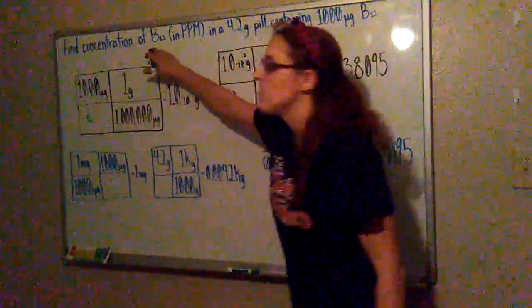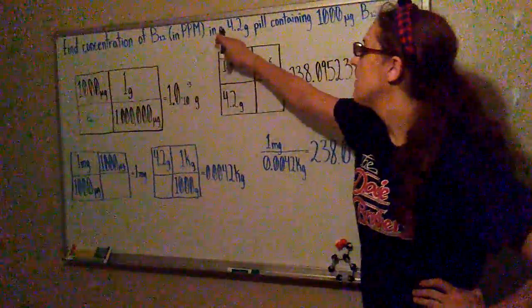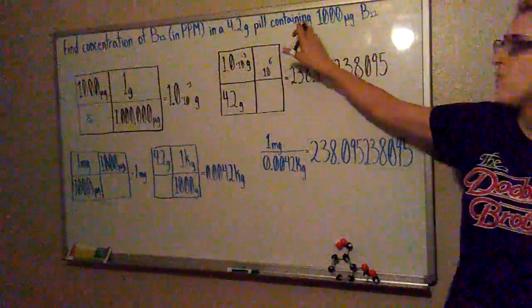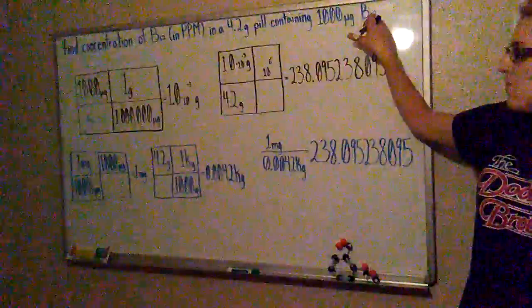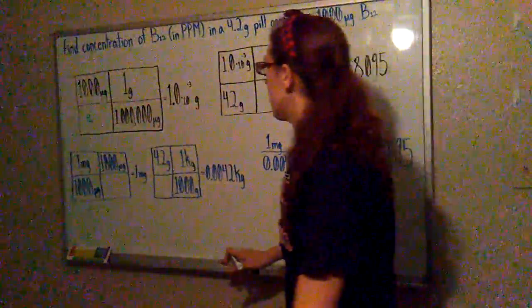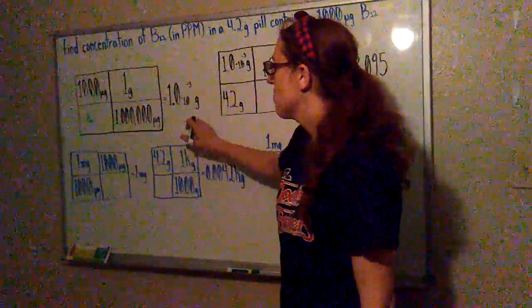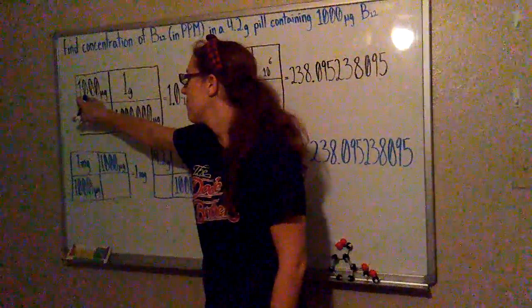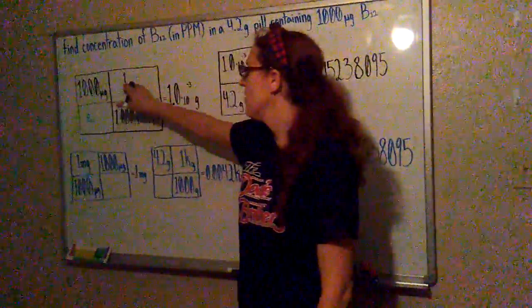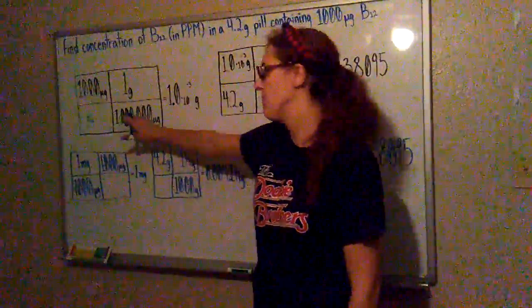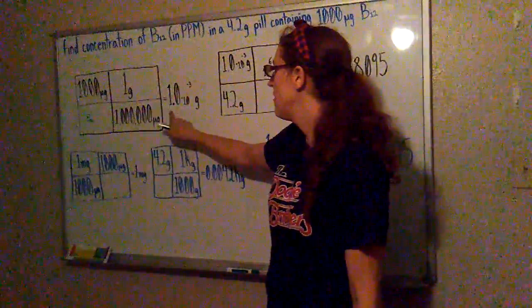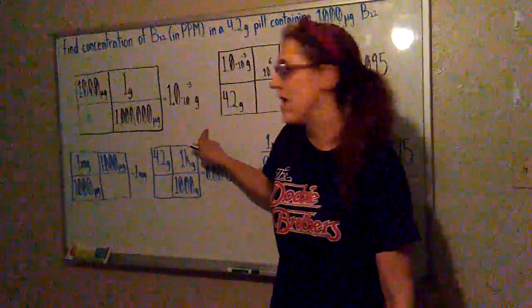Find concentration of B12 in parts per million in a 4.2 gram pill containing 1,000 micrograms of B12. So first we're going to convert micrograms to grams by multiplying the 1,000 micrograms by 1 gram for every 1,000,000 micrograms to give us 1 times 10 to the negative 3 grams.